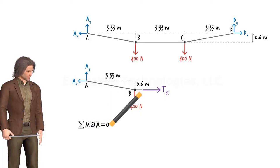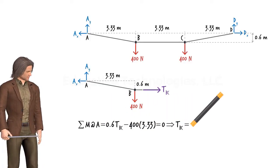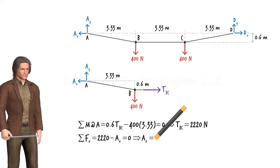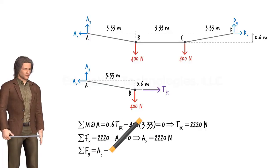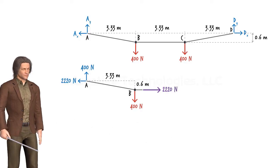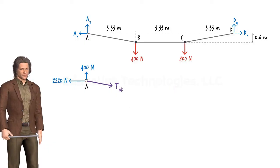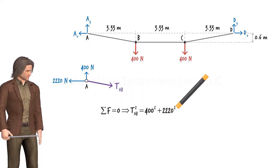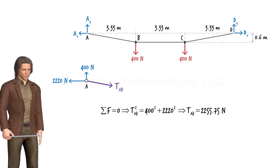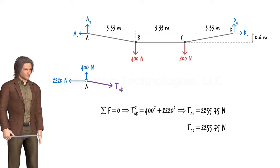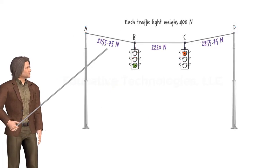If we sum the moments about point A, we get TBC. Knowing TBC, we can sum the forces in the X direction to determine AX, and summing the forces in the Y direction gives us AY. To determine the tension force in segment AB, we draw the free body diagram for point A. Since the sum of the forces at A must be zero, the algebraic sum of the reaction forces equals the tension force in the cable. Because the system is symmetrical, the tension force in segment CD equals that in segment AB.